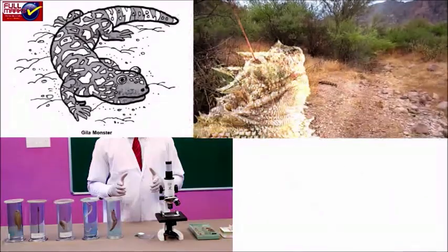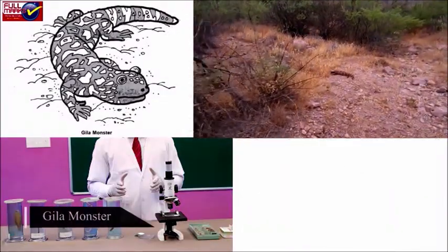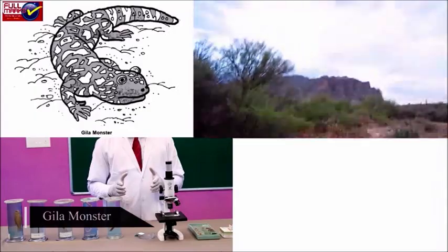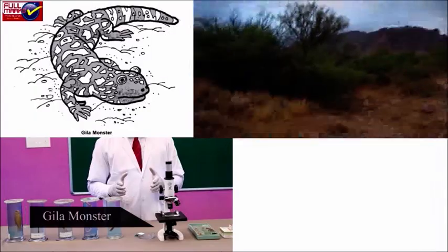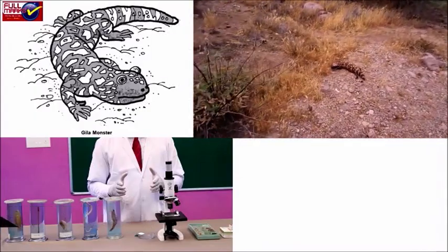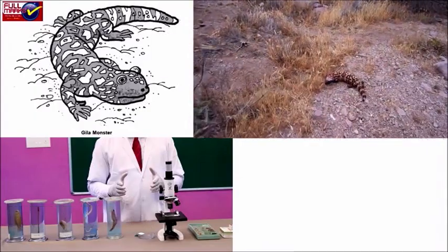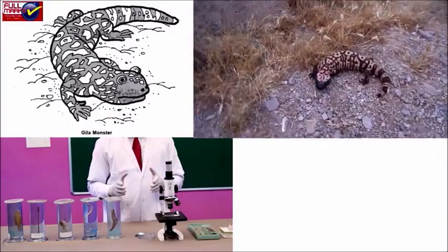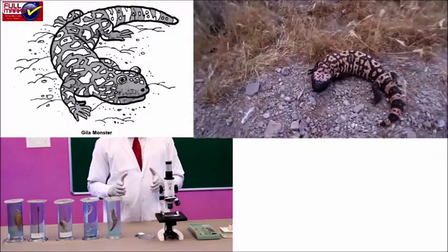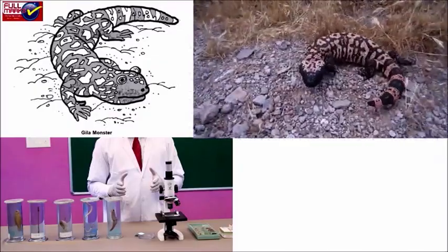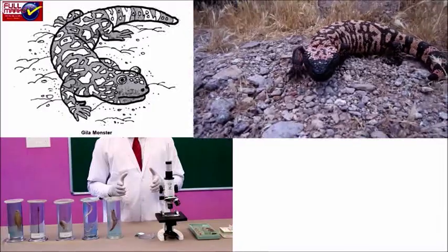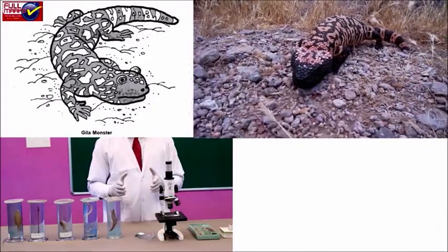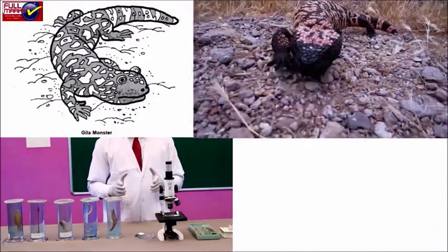Gila Monster: It is a poisonous, giant desert lizard. The body is covered with black and orange scales. It is uricotelic. Limbs are short. It lays eggs in a nest formed in sandy soil and can change its body color with its surroundings.